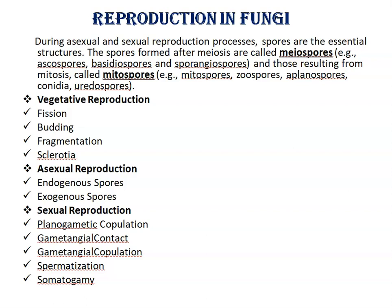Fungi reproduce vegetatively by means of fission, budding, fragmentation, and sclerotia. Asexual reproduction occurs by means of endogenous spores or exogenous spores. Sexual reproduction in fungi includes various methods like planogametic copulation, gametangial contact, gametangial copulation, spermatization, somatogamy, etc.